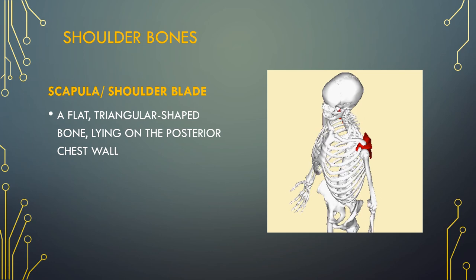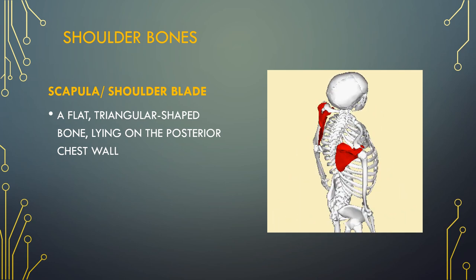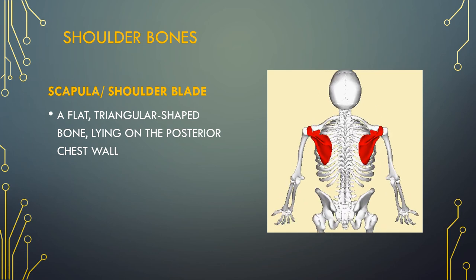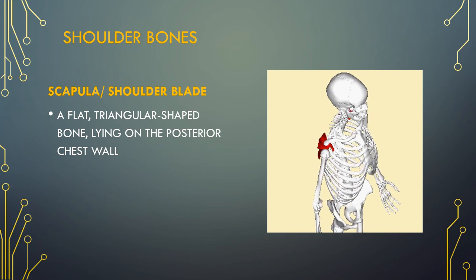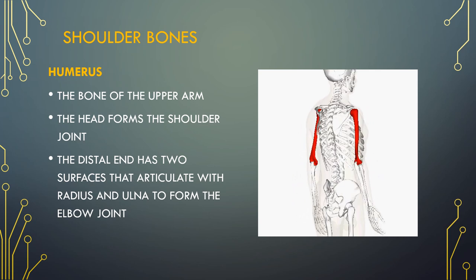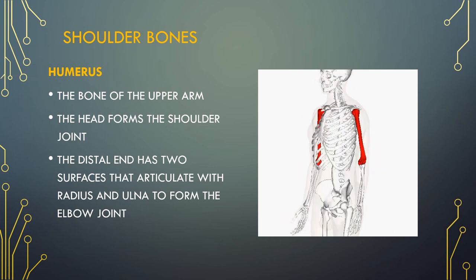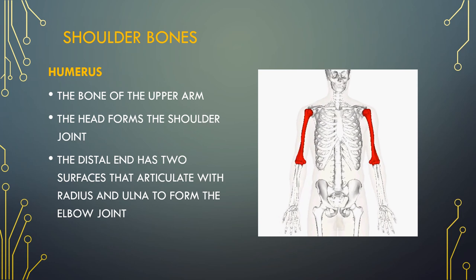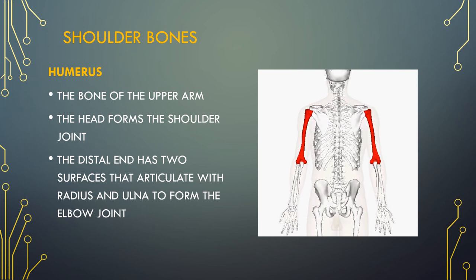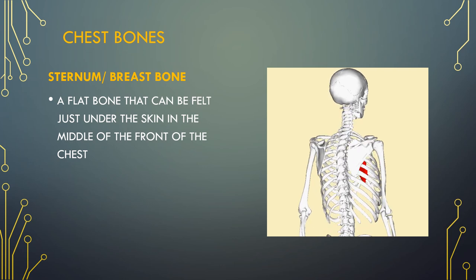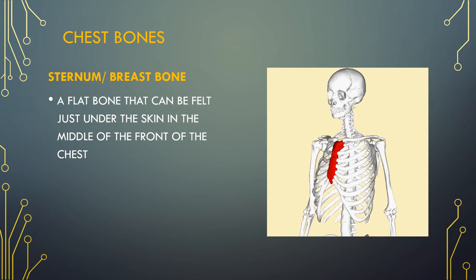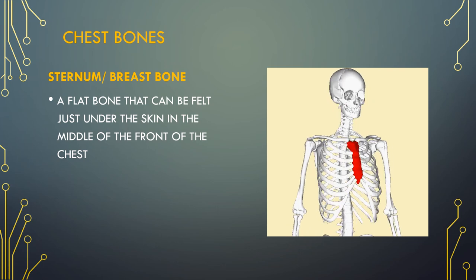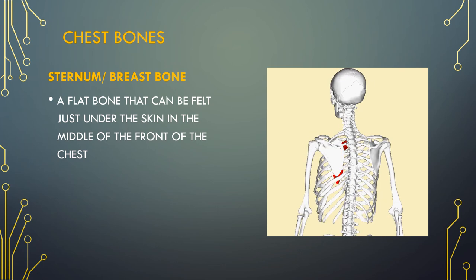The scapula or shoulder blade is a large triangular-shaped bone that lies in the upper back. The bone is surrounded and supported by a complex system of muscles that work together to help you move your arm. The humerus is the arm bone between your shoulder and your elbow. The head forms the shoulder joint. The distal end has two surfaces that articulate with the radius and the ulna to form the elbow joint. The sternum, sometimes known as the breast bone, is a flat bone that sits at the front of the chest and connects with the ribs with cartilage. It is part of the rib cage, a series of bones that protects the heart and lungs from injury.